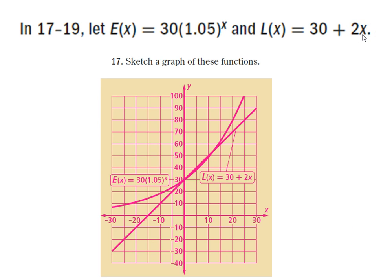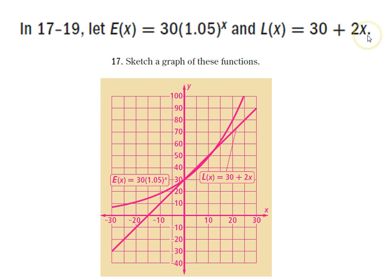If x is 10 in L of x, then L of 10 is 50, because 2 times 10 is 20 plus 30 is 50 — and that's exactly where the line lines up. If we plug in 20 into L of x, 2 times 20 is 40 plus 30 is 70, so we get out 70. If we plug in 30, we get 2 times 30 is 60 plus 30 is 90. Plotting all those points, we can draw the line for L of x.